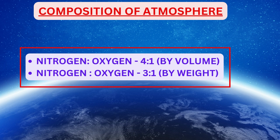The ratio of nitrogen and oxygen is 4:1 by volume and 3:1 by weight, which means that oxygen is heavier than nitrogen. If you want to know more about it, go through the atomic numbers of oxygen and nitrogen.